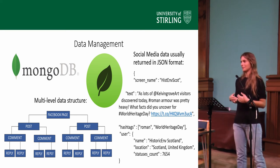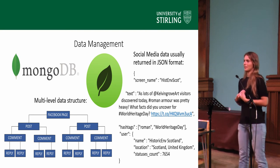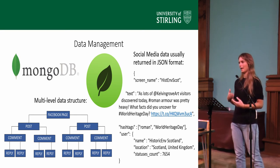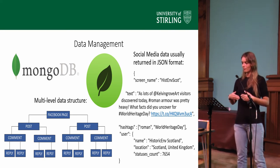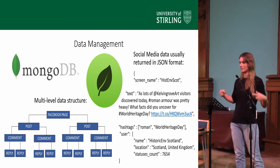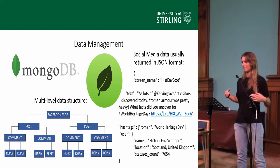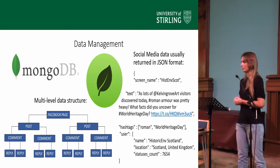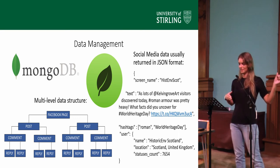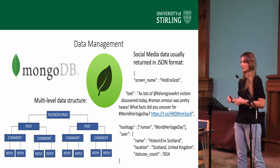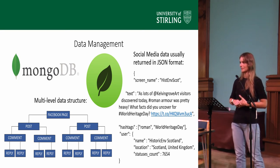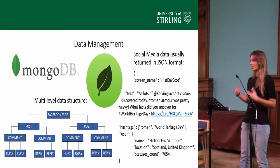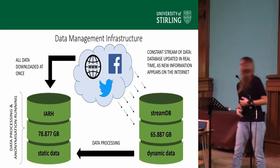The high variability of data structures we encountered also forced us to adjust our data management strategy. Because our data was very often hierarchical — for example on Facebook you have public pages, and under them you have posts, and under those comments, and then replies — and within all these levels the data is also structured in a very variable way: some fields contain just text, while some contain lists or arrays. This doesn't fit well in traditional relational databases, so we used a non-relational MongoDB database to facilitate this, and on the basis of that we developed our whole data management infrastructure.